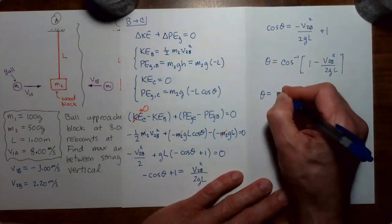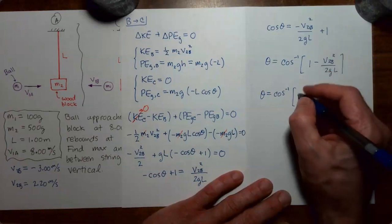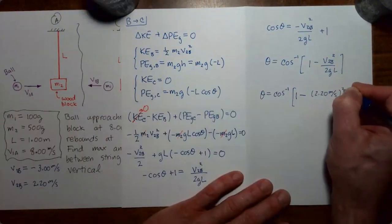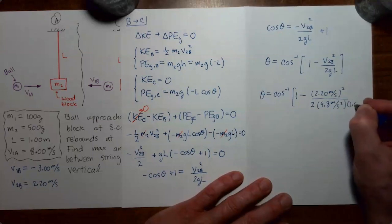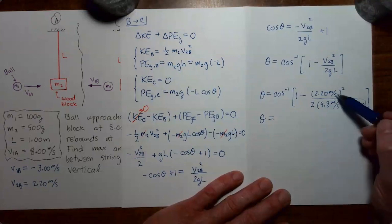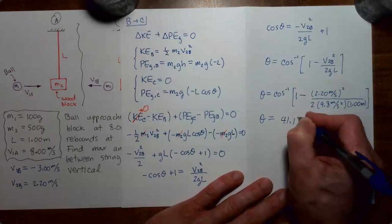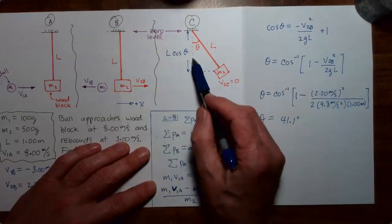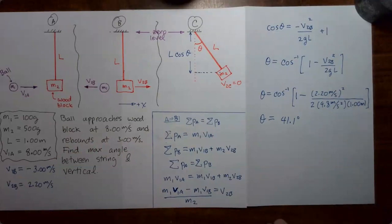Substituting values — the argument of an inverse cosine should be unitless. We have V2B = 2.20 m/s, g = 9.8 m/s², L = 1 m. The units in the numerator are m²/s² and in the denominator m²/s² as well, so the expression is unitless. This gives θ = arccos(1 − (2.20)²/(2 × 9.8 × 1)) = 41.1°. So mass 2 swings upward, and at the greatest height the angle between the string and the vertical is 41.1 degrees. This completes a second example problem involving both momentum conservation and mechanical energy conservation.